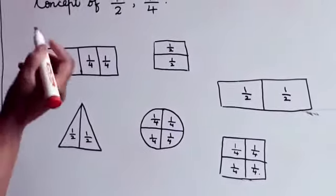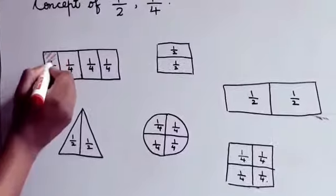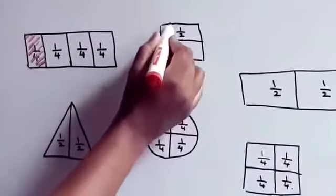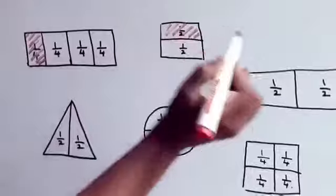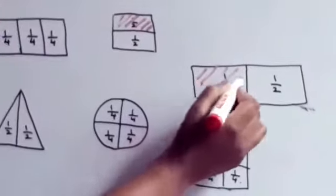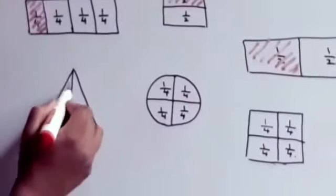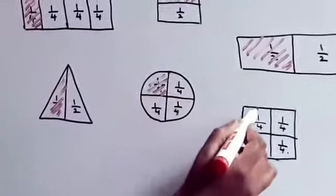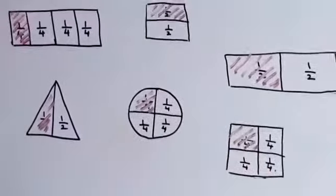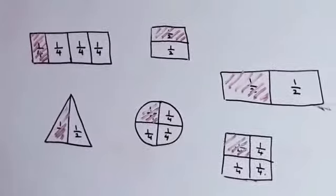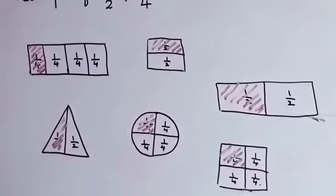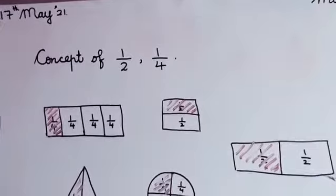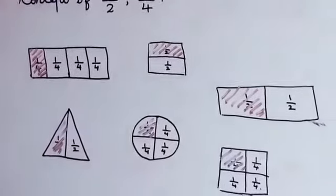We are going to color one half, and then one fourth. You are going to color half, then color one fourth. Do you understand? Clear everybody? So do this on the copy very neatly and then send it to me. God bless you all, bye.